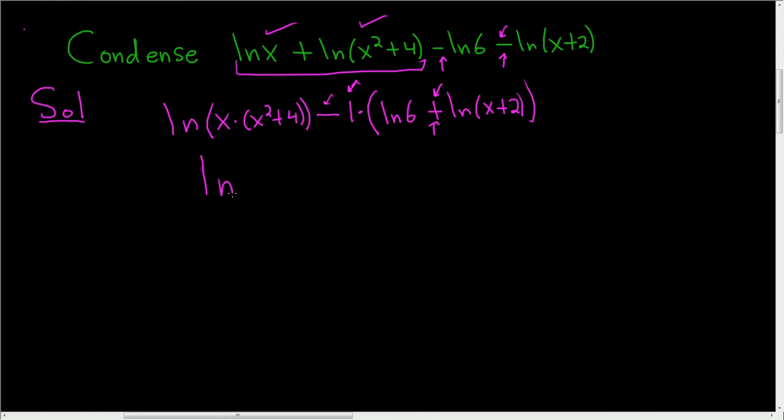All right, this is the natural log of – I'll go ahead and distribute here. x times x squared is x cubed, and then x times 4 is 4x.